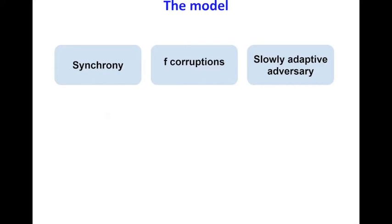Before we proceed to the core results of the paper, I will introduce the model — the assumptions of our framework. First, we assume we are in the synchronous model, which means the protocols we evaluate proceed in rounds. Multiple consecutive rounds define an epoch. Second, we assume the adversary is computationally bounded, meaning the cryptography used holds, and the adversary can corrupt at most f out of n parties. In a permissionless system, this translates to the adversary controlling a percentage of computational power in a proof-of-work system, or a percentage of stake in a proof-of-stake system. Last, we assume the adversary is slowly adaptive — meaning the adversary is static during an epoch (the parties it can corrupt cannot change), while it is adaptive from epoch to epoch and can change the corruption set between epochs.